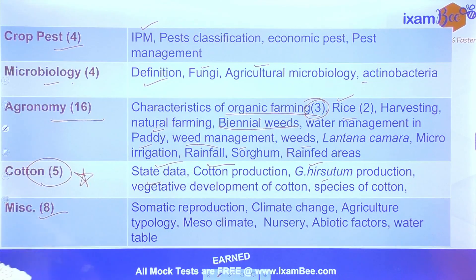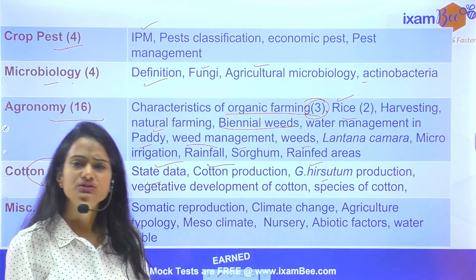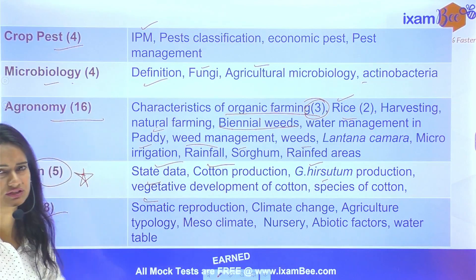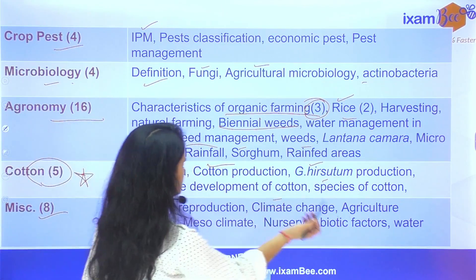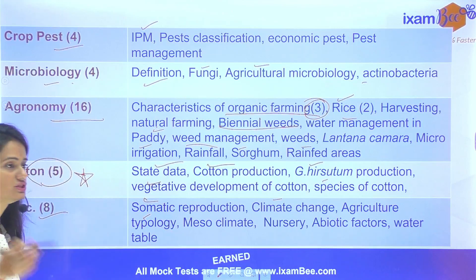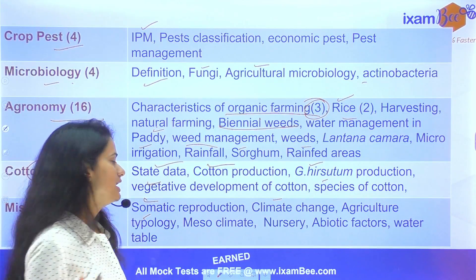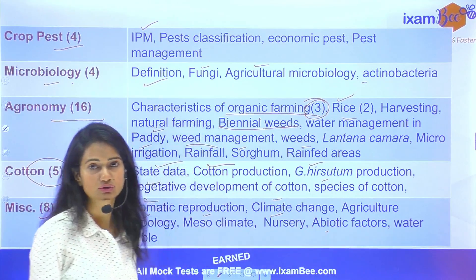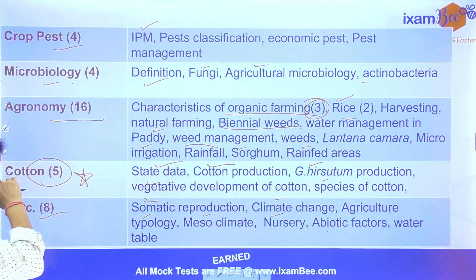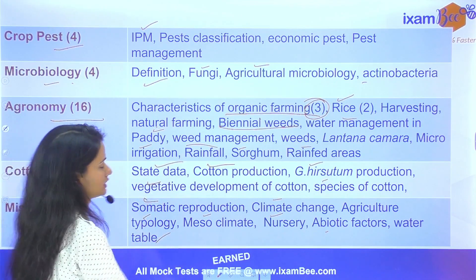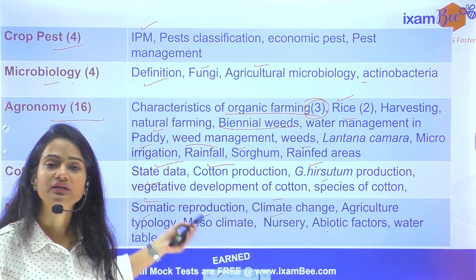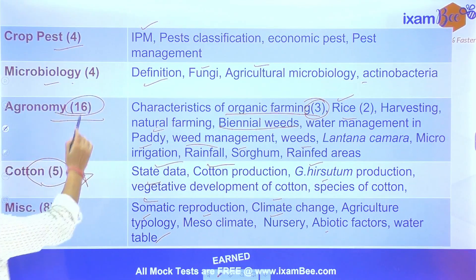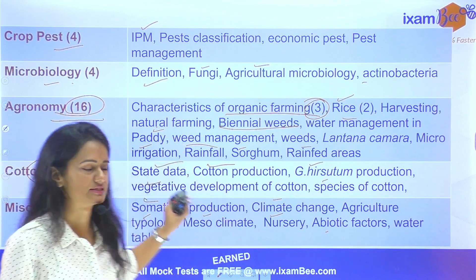Iske alawa miscellaneous topics bhi the, matlab general agriculture wale questions. Somatic reproduction kya hota hai, genetic wala question aaya tha. Climate change question tha, agriculture typology — kaun si country se sabse pehle start hui, meso climate kya hota hai, nursery, abiotic factors kaunse hain, water table ka question tha — ye sare type ke questions agronomy ke portion se the.